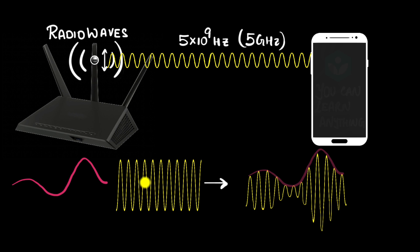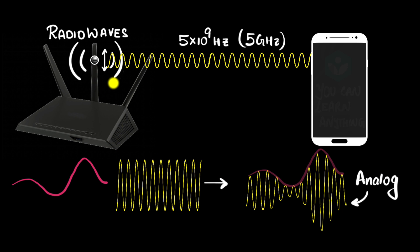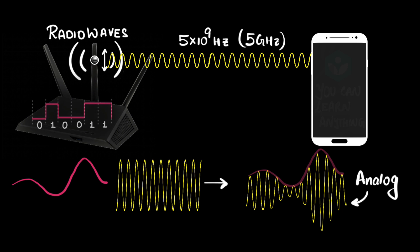The idea is you change some property of your radio wave in accordance with the message you want to send. Since this is a continuous wave being modulated, we call this analog modulation. Your wi-fi does not do that — your wi-fi uses digital modulation, because it sends messages in bits: zeros and ones. This is a digital message.